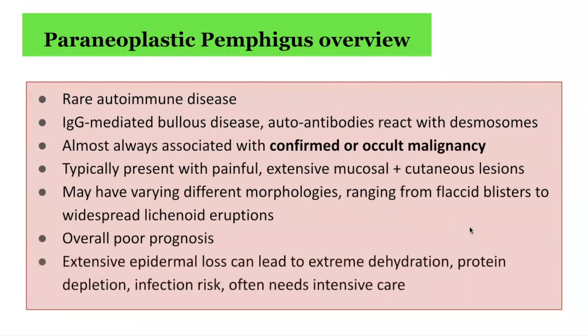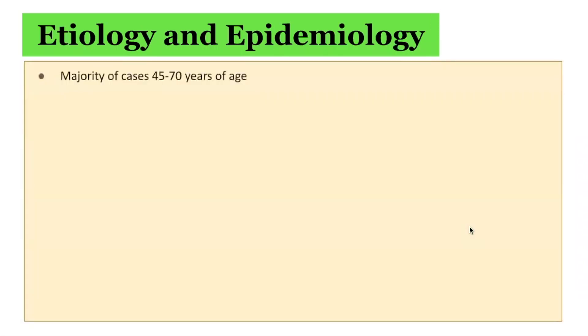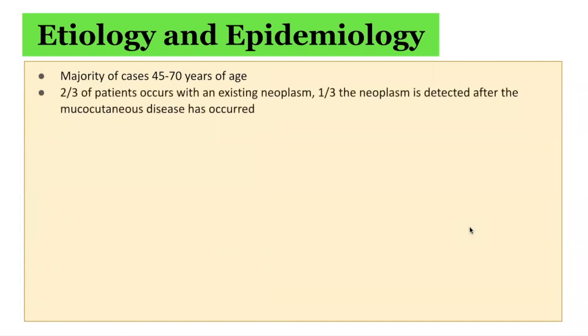These patients overall have a poor prognosis. There can be extensive epidermal loss, which can lead to extreme dehydration, protein depletion, infection risk, and they may often need intensive care. The majority of cases are reported in the age group of 45 to 70 years. Two thirds of patients present with an existing underlying malignancy or neoplasm, whereas in one third of cases the neoplasm is detected after the presentation of the pemphigus.